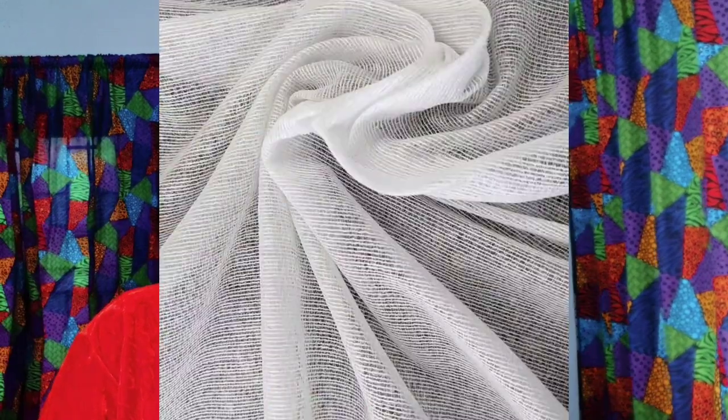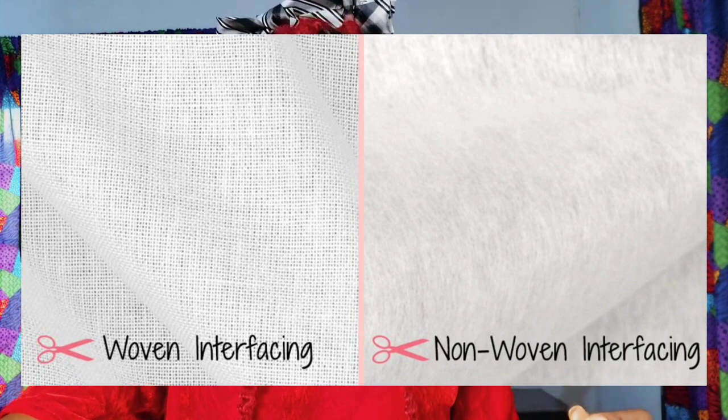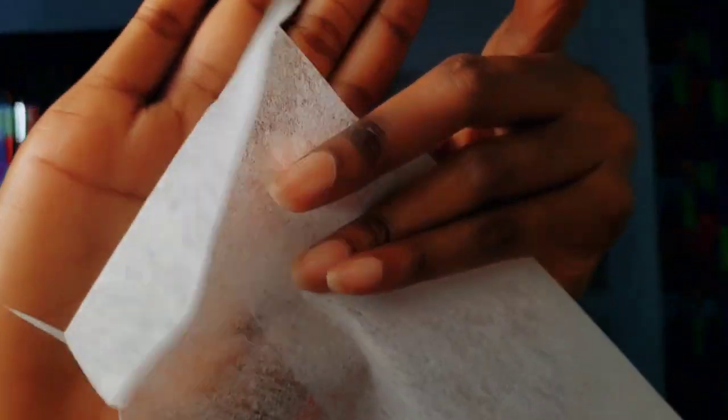The woven interfacing is more like a normal fabric — it gives you a fabric type of feel, where the thread passes horizontally and vertically. The non-woven interfacing, which I love to use most of the time, is a paper type of interfacing. The woven gives you a cutting/muslin type of feel, while the non-woven gives you a paper type of feel. When you fold it like paper, it stays — compared to the woven interfacing.